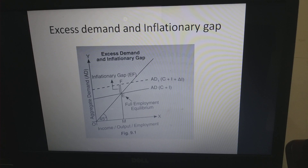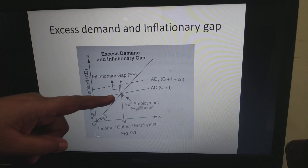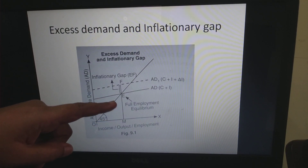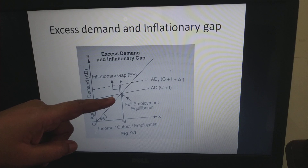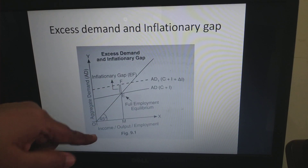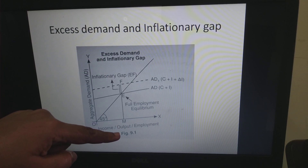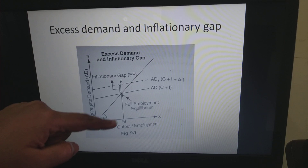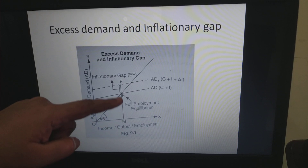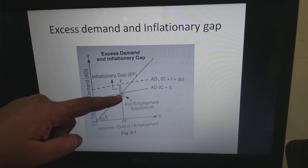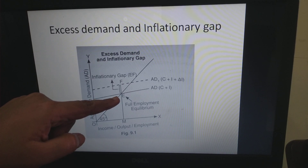Look at this slide. It shows the full employment equilibrium at point E. OM is the full employment level of output; corresponding to this level, AD equals AS. That is the full employment equilibrium attained at E.